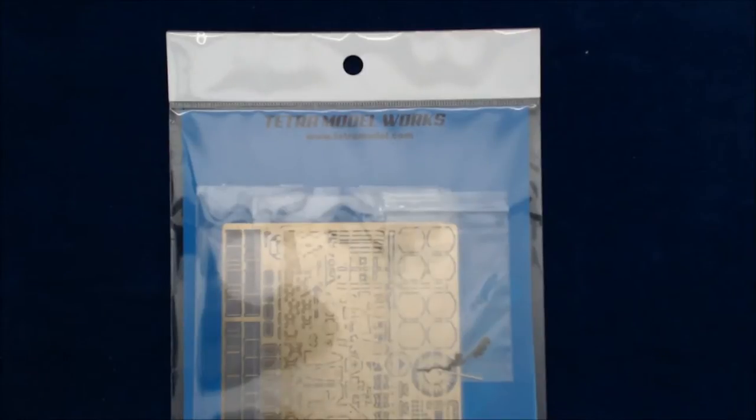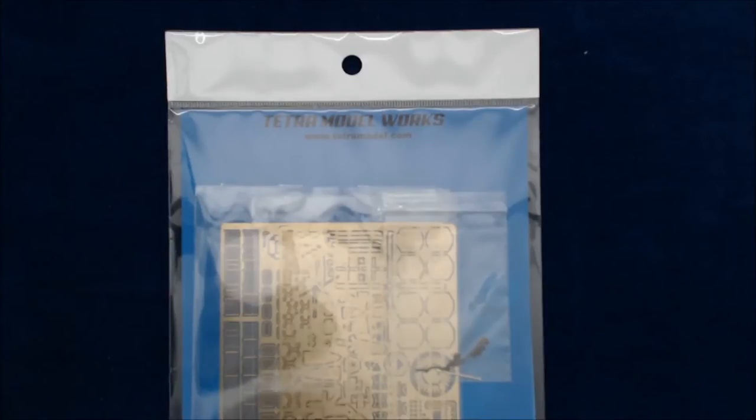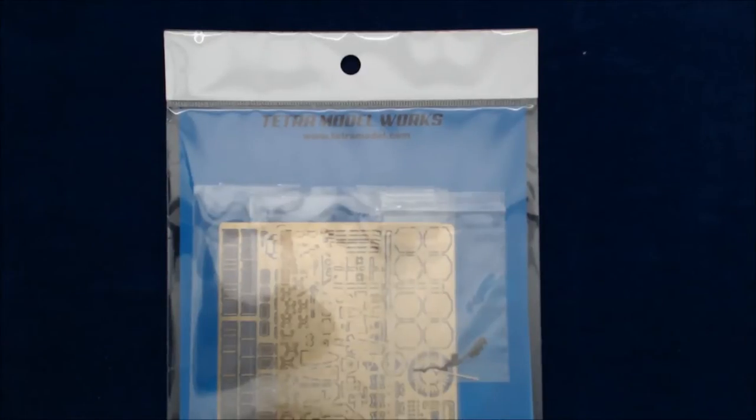Hi, this is Jim Starkweather, the publisher of KitMaker Network and Model Shipwrights, and we've got for you a review, or not a review per se, but a close-up look at the new Tetra Model Works photo etch detail set for the 1-350th scale USS DDG-82 Lassen.